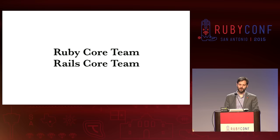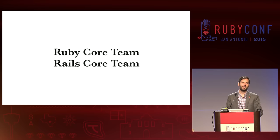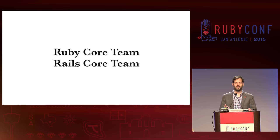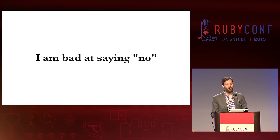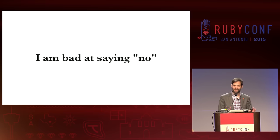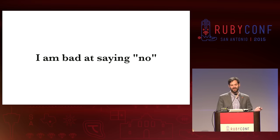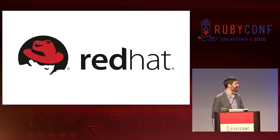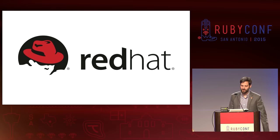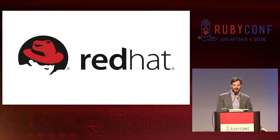I'm on the Ruby core team and I'm on the Rails core team. This doesn't mean that I know what I'm talking about — it just means that I'm very bad at saying no. This is very true. I work at Red Hat. I'm an engineer at Red Hat, on the Manage IQ team.